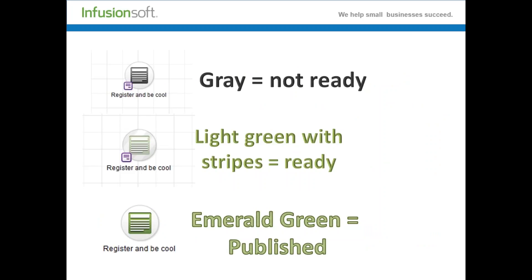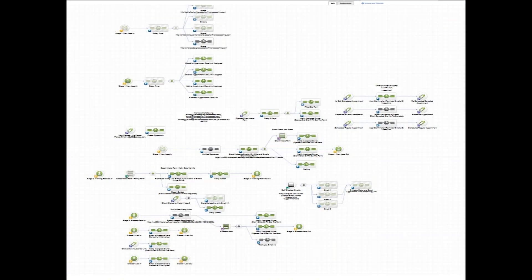To reiterate: gray means not ready. Light green with stripes means ready. Emerald green means it's published and the code is ready to use.